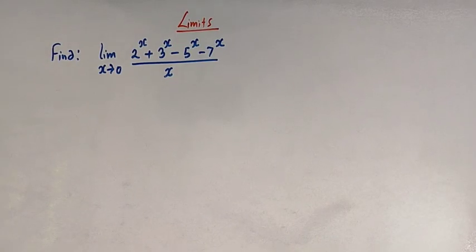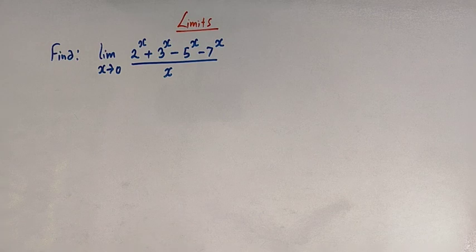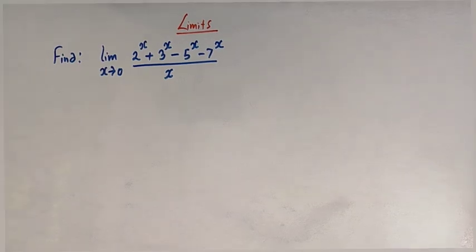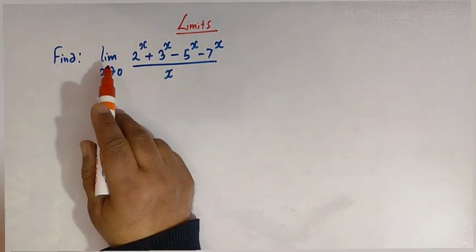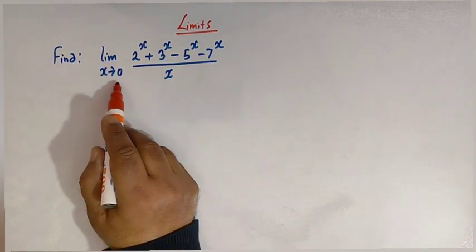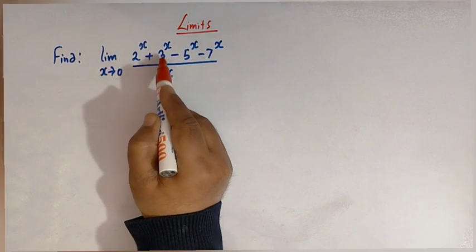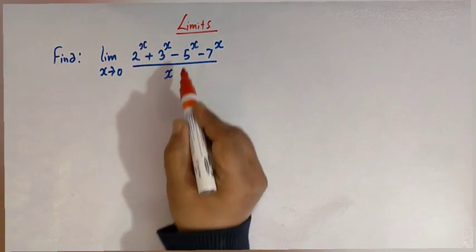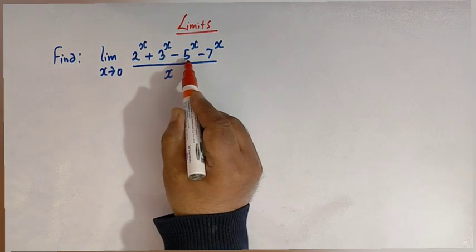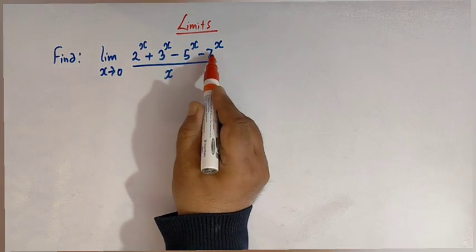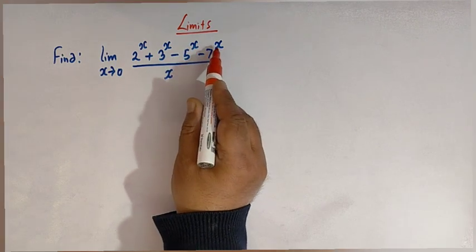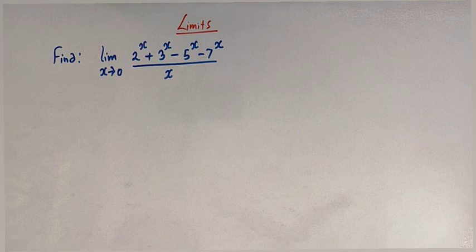Hello viewers. In today's class we are going to discuss one important limit. So here we have to solve this limit, that is limit x tends to 0: 2 raised to x plus 3 raised to x minus 5 raised to x minus 7 raised to x, divided by x.